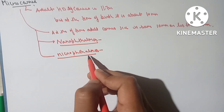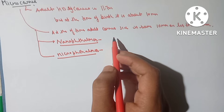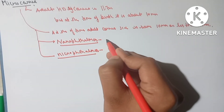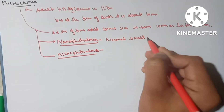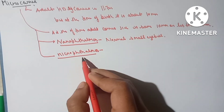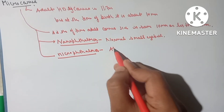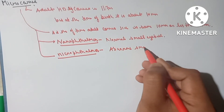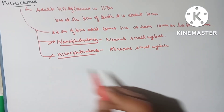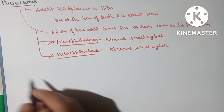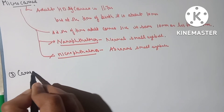Under microcornea we discuss two conditions. First is nanophthalmos and second is microphthalmos. In nanophthalmos, the whole eyeball is small but it is normal — we call this a normal small eyeball. In microphthalmos, the whole eyeball is small but it is abnormal — we call this an abnormal small eyeball.